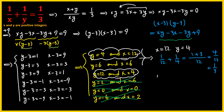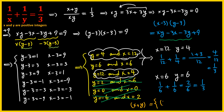For x = 6 and y = 6: 1/6 plus 1/6 equals 2/6, which reduces to 1/3. So x = 6 and y = 6 also satisfies the equation. Therefore the solution set is (x, y) ∈ {(4, 12), (6, 6), (12, 4)}.